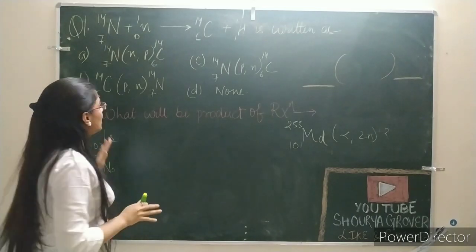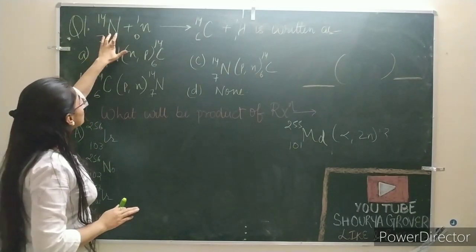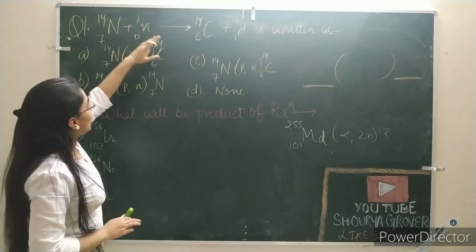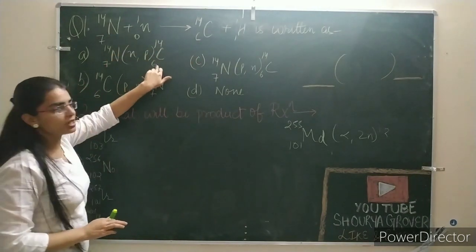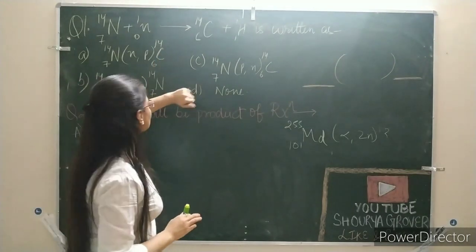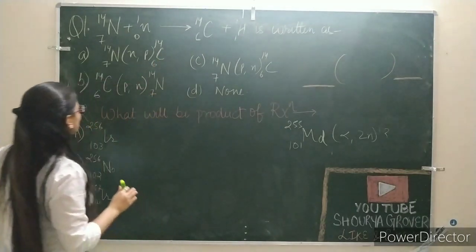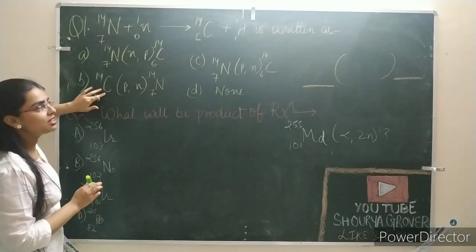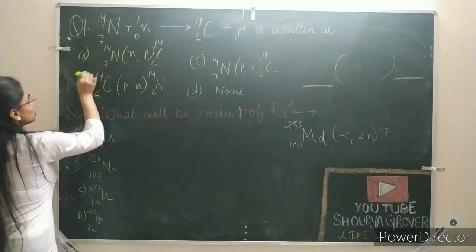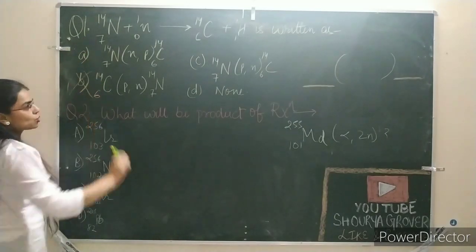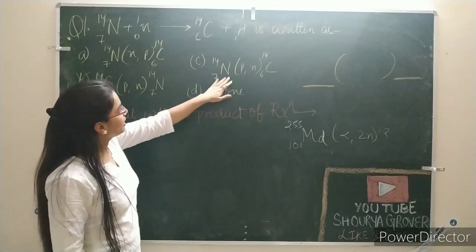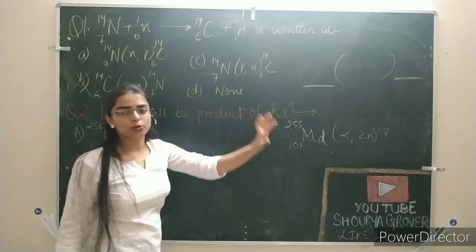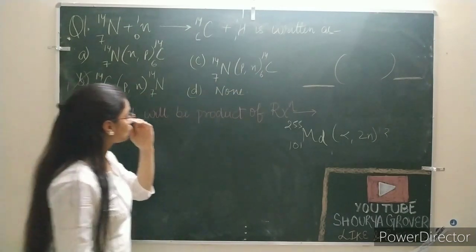What are our options? First of all, the nitrogen should be here — yes, this is right. Carbon should be here. This bracket should be fine. Let's go to option B. Carbon is on the side. I have told you that the reaction nuclei will come. It has to be a cross — this is either nitrogen or carbon. This is exactly what we have done.